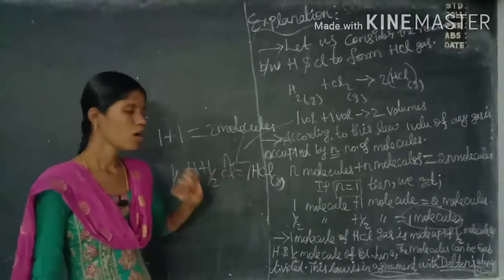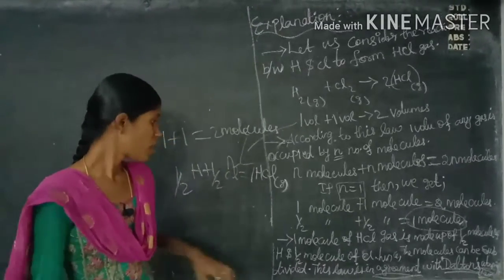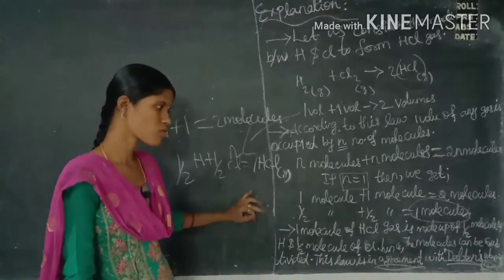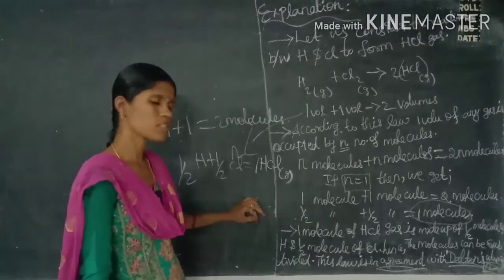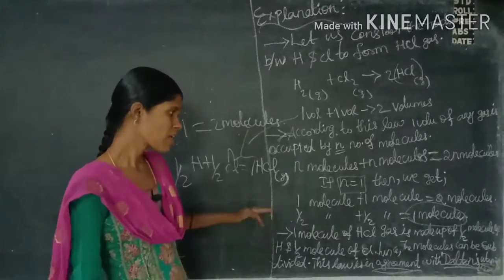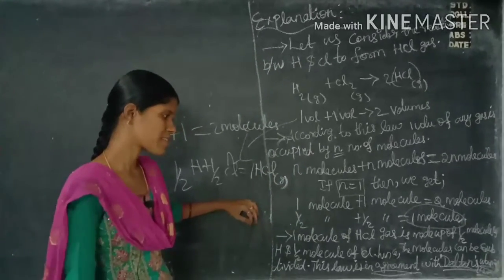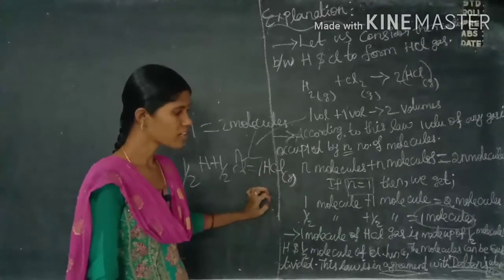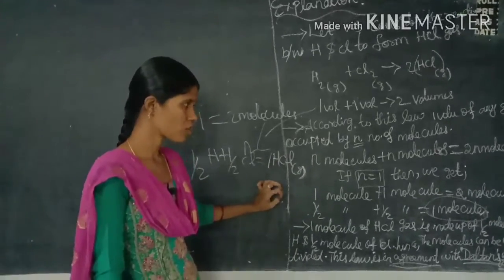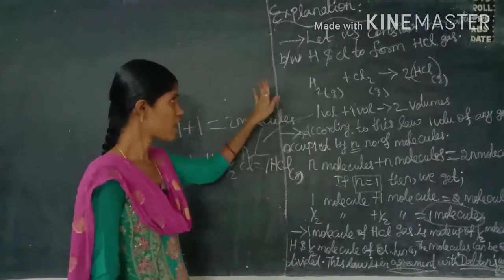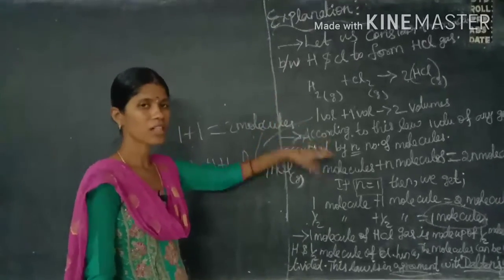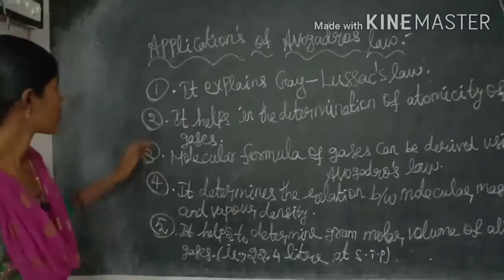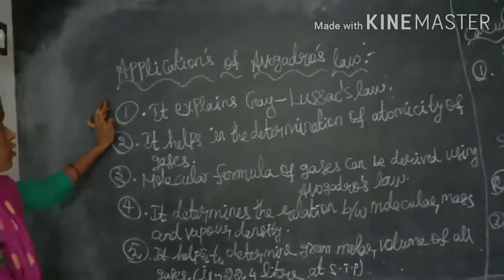Alternatively, half a molecule plus half a molecule equals one molecule. So one molecule of hydrogen chloride gas is made up of half a molecule of hydrogen and half a molecule of chlorine. This means molecules can be subdivided. Half molecule plus half molecule equals one molecule of hydrogen chloride. This law is in agreement with Dalton's atomic theory.